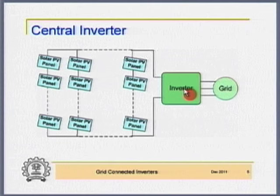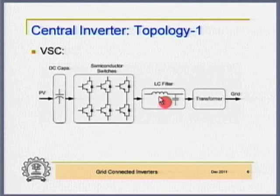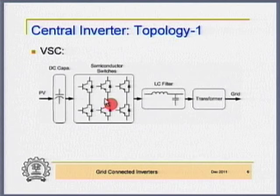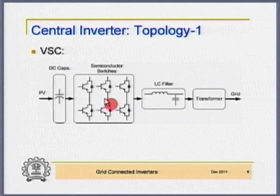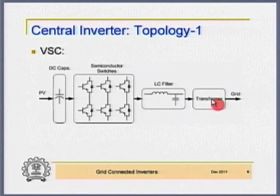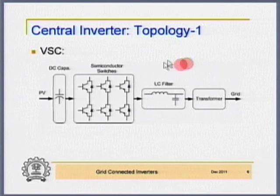This inverter could be either 2-level, 3-level, or a multilevel inverter. There is an LC filter to filter out high frequency components. As the power rating increases, you have to reduce the switching frequency. When you reduce the switching frequency, the frequency of the predominant harmonic in the output voltage also comes down, and that has to be filtered out using an LC filter. In addition, there is a transformer with leakage inductance, so it forms an LCL filter.